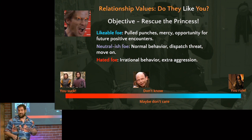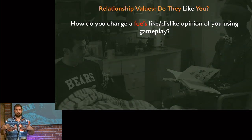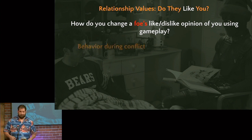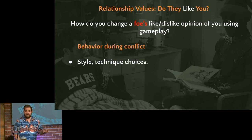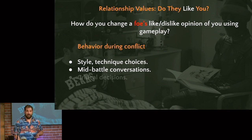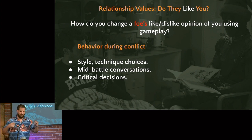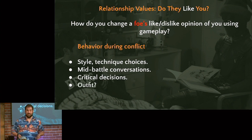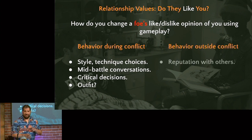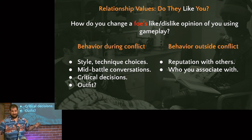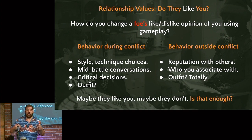How do you make a foe like or dislike you during play? During a conflict, the things you do in the fight — your style, your technique choices — might impress them or not. If you can talk to them, throw taunts back and forth. Critical decisions matter: do you show mercy when they're defeated? Maybe what you're wearing is cool — ostentatious armor might make them dig it. Outside of a fight, your reputation precedes you. If you're a tunnel snake and they hate tunnel snakes, they'll dislike you from the start.